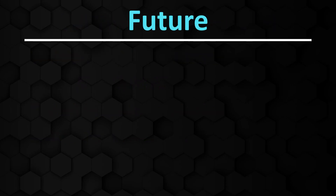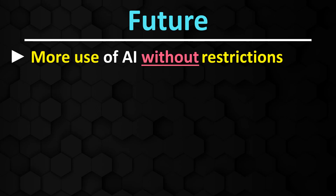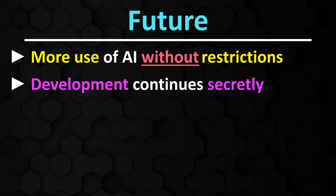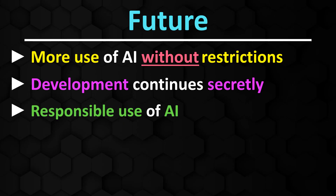It is expected that the development and use of AI models without restrictions will increase in the future. Even though the European Union is working on laws to regulate the handling of artificial intelligence, it is very likely that development will continue secretly, bypassing these guidelines. We should not forget that ChatGPT suddenly appeared as well, and to this day we do not know exactly which sources were used for its training. Although it is now possible to specify in the robots.txt that OpenAI crawlers should not include certain content in their training, developers of language models intended for criminal purposes usually do not adhere to these rules. In my opinion, we should focus more on responsible use of artificial intelligence and conduct educational work in this area to reduce the likelihood of success of fraud attempts with the help of AI tools as much as possible.